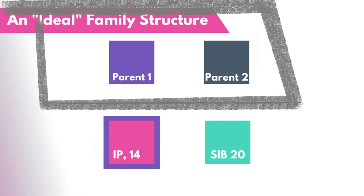When you compare the family map I just created to the ideal version and put the two side by side, you actually get an outline of what is going to be your treatment plan. Essentially what we're saying is that this ideal family hierarchy is the goal of treatment, and the treatment plan is all of the steps we need to take to get there. Let me give you an idea of what the treatment plan might look like just based on these two versions of the map.